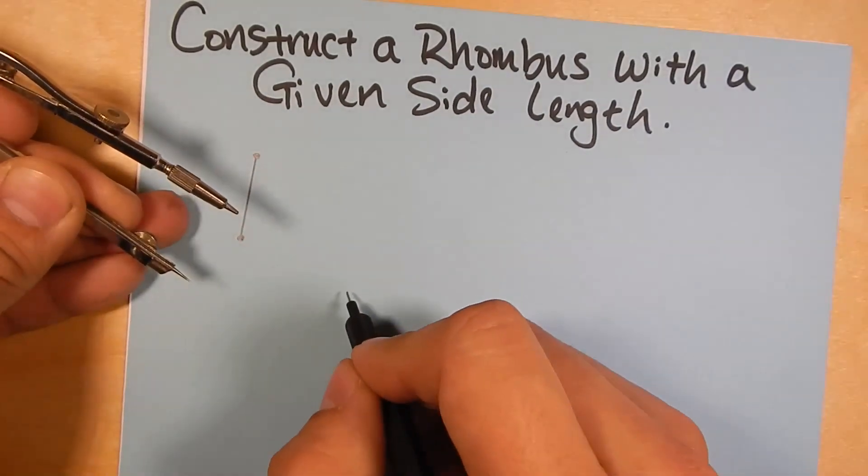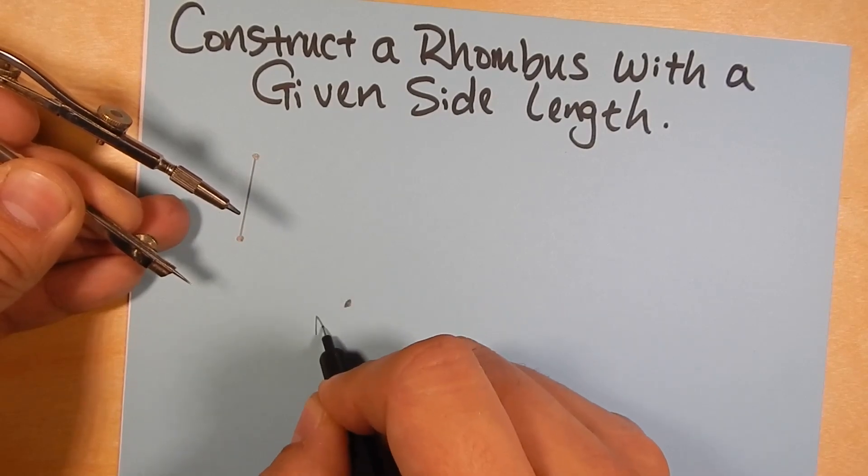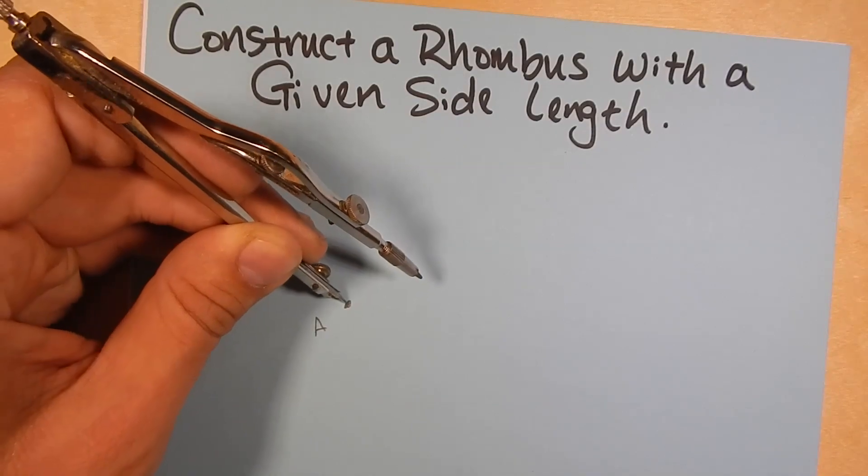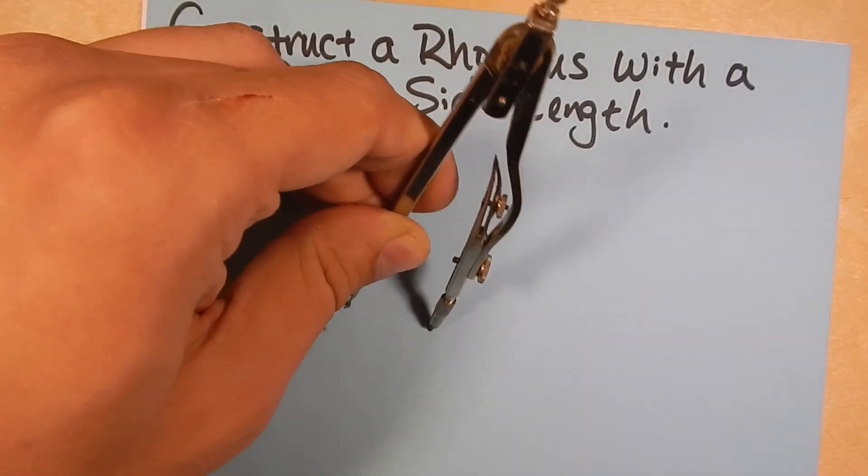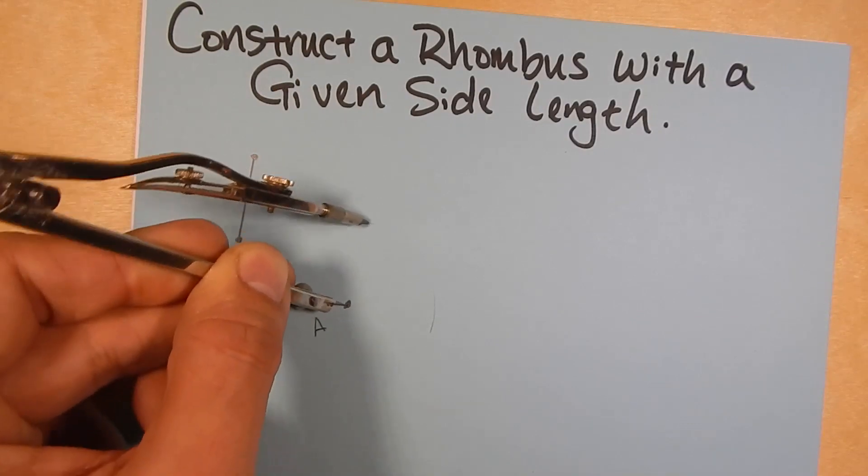And we're going to make a point that we're going to start with. So we'll call this point A. So this point we're going to take our stick point and make an arc down here. Let's make an arc up here.